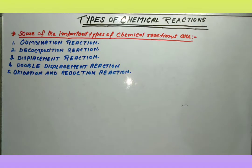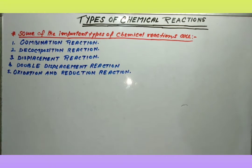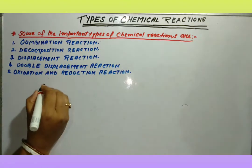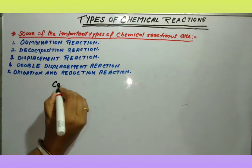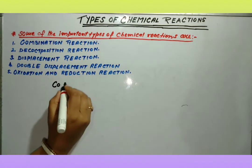हम लोगों को तो यह पता चल गया students कि chemical reaction क्या होता है, chemical reaction कैसे होता है — we all know that. But अब यह chemical reaction का नाम भी होता है, type of chemical reaction भी होता है। जैसे कि first type of reaction क्या है — combination reaction.